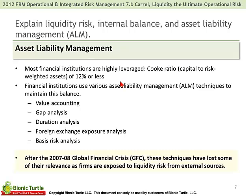And that means that any decrease in assets equivalent to the Cook ratio immediately makes them technically insolvent. He says that bank financial institutions use a variety of asset liability management techniques, but that after the global financial crisis, these techniques have lost some of their relevance as firms are exposed to liquidity risk from external sources.